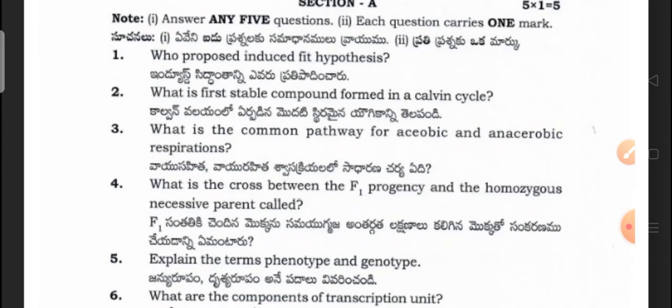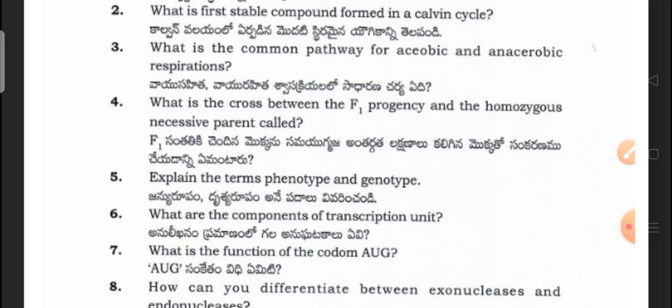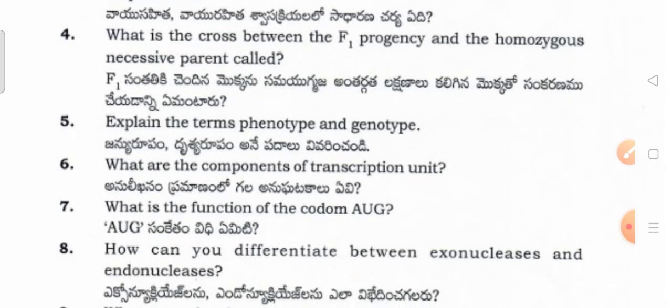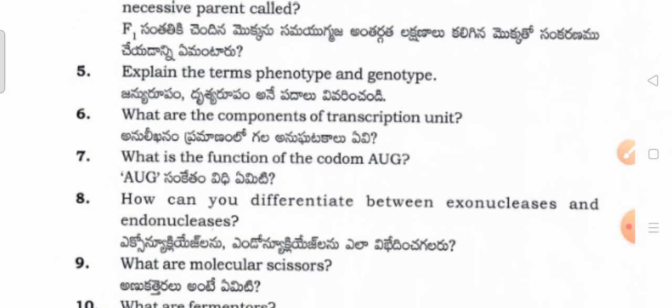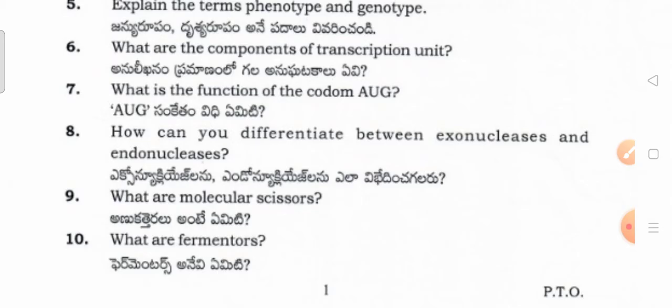What is the common pathway for aerobic and anaerobic respirations? What is the cross between the F1 progeny and the homozygous recessive parent called? How can you differentiate between exonucleases and endonucleases? What are the molecular scissors? What are fermenters?